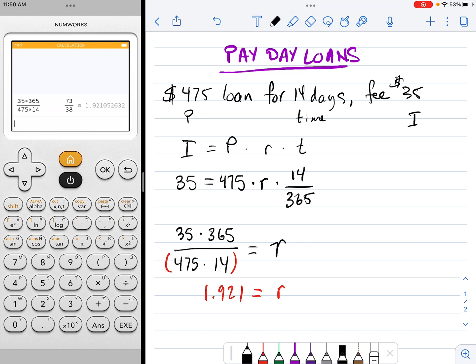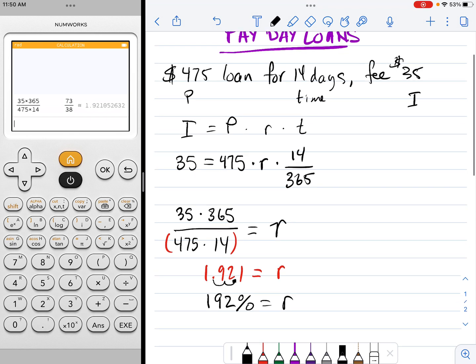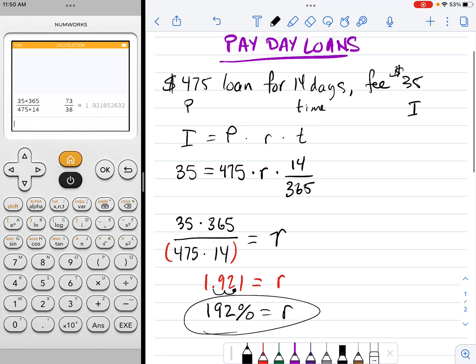This is a percentage rate, which means if I convert it into a percent I'll move the decimal place over two. If I just want to round to the nearest percent, I've got 192 percent interest rate. So the payday loan company is charging me 192 percent, but it's only for 14 days which is resulting in that interest fee of $35.